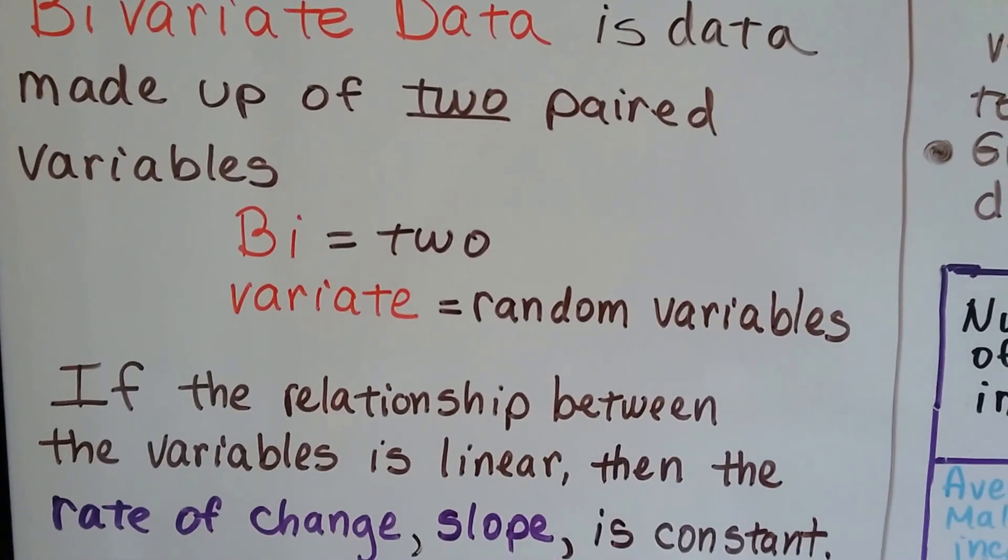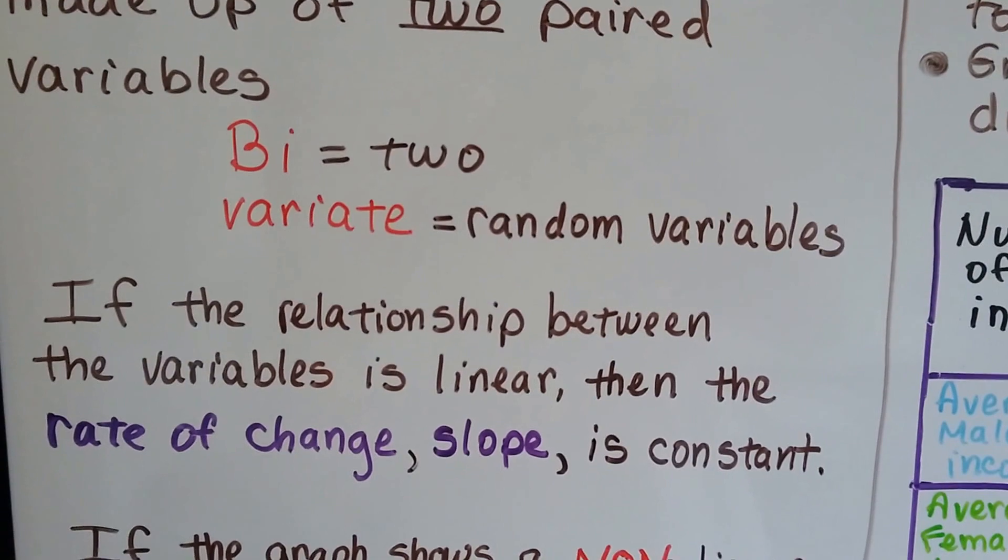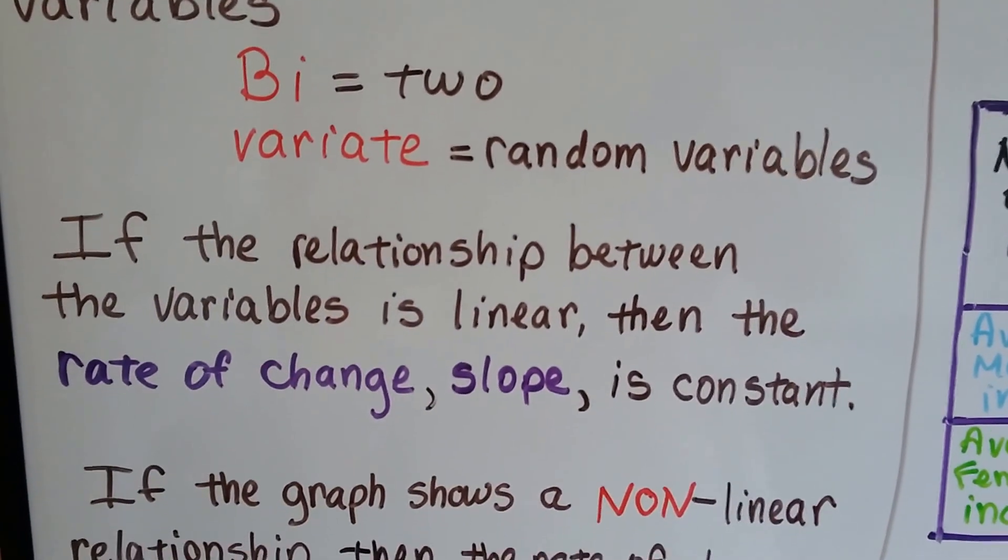Bivariate data is data made up of two paired variables. Bi means two, and variate means random variables.